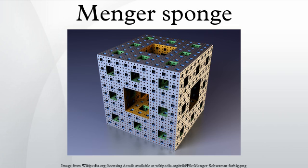The construction of a Menger sponge can be described as follows: begin with a cube. Divide every face of the cube into nine squares, like a Rubik's cube. This will subdivide the cube into 27 smaller cubes. Remove the smaller cube in the middle of each face, and remove the smaller cube in the very center of the larger cube, leaving 20 smaller cubes. This is a level one Menger sponge.